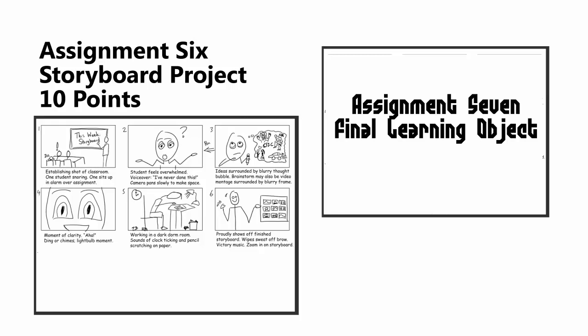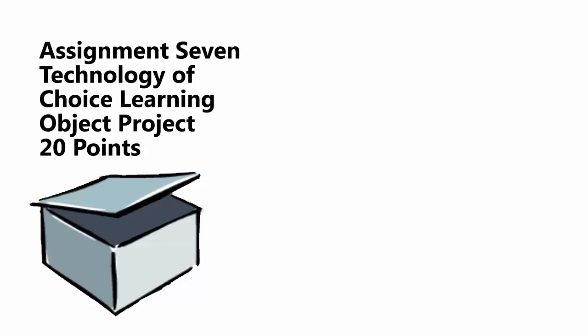You will learn storyboarding techniques as part of the sixth assignment. The last assignment, which will be worth 20 points, will be building a learning object of your choice. The project will involve the use of elaboration or cognitive flexibility theory to construct a learning object using digital resources. The main focus with the seventh assignment is to utilize and build on the skills you've acquired with all the assignments to create instruction, choosing the technology and content that you would like to develop.